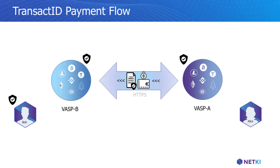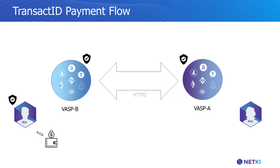VASP B can now run sanctions or any other checks on Alice's ID. After VASP B validates Alice's ID, Bob signs a transaction to the blockchain that looks exactly like every other address-to-address transaction. In this way, no personally identifying information is ever written to the blockchain.